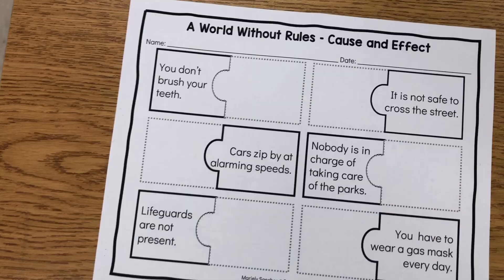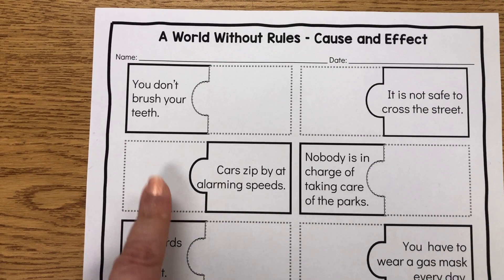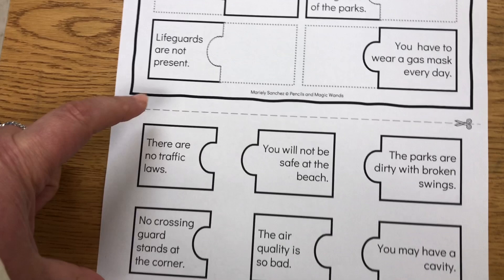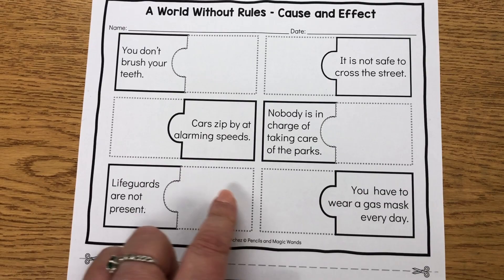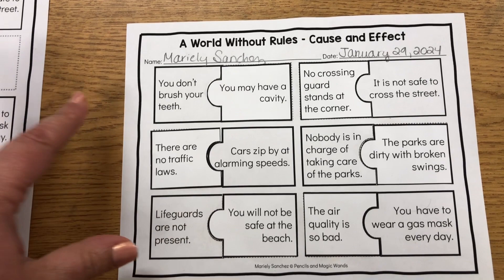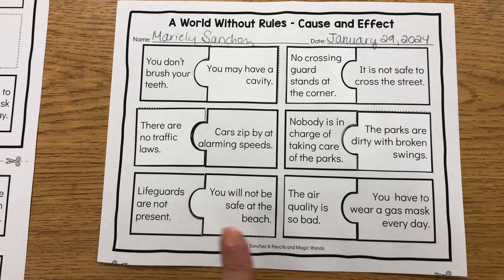For my ELL group, they were working on practicing connecting cause with effects. I created a handout where they had to cut the bottom half into puzzle pieces and glue them next to the place where they are missing. This is my completed example so you can see how it comes together.